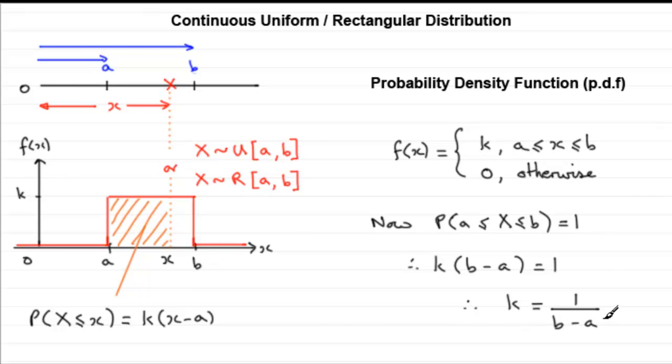So in this introductory video then, all I've done is just show you what the sketch of the probability density function for a continuous uniform rectangular distribution looks like. It always looks like this.